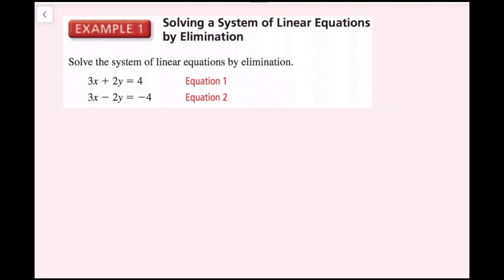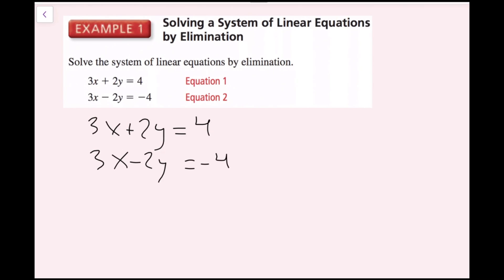For Example 1, we're going to solve the system of linear equations by elimination. The equations are 3x plus 2y equals 4, and 3x minus 2y equals negative 4. Notice that I have matching coefficients for the x's, and opposite coefficients for the y's. You can actually do this in two different ways — I'll show you both in just a moment.